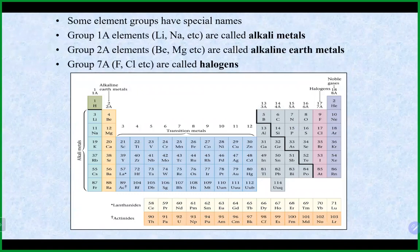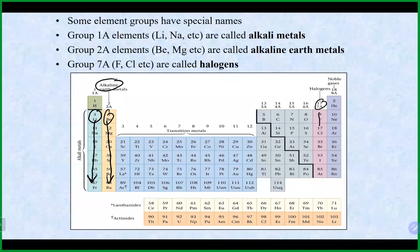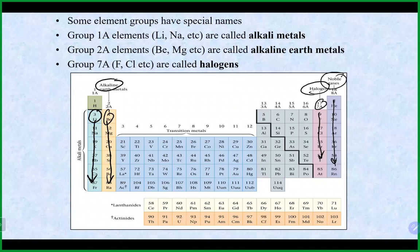Some groups have specific names. Group 1 (starting with lithium, not hydrogen) is the alkali metals. Group 2 (starting with beryllium) is the alkaline earth metals — the word alkaline means basic, and many strong bases like sodium hydroxide, potassium hydroxide, and calcium hydroxide come from groups 1 and 2. Group 7 — fluorine, chlorine, and so on — are the halogens. Group 8 is the noble gases: helium, neon, argon, and so on. You need to know the specific names of these groups and where they are on the periodic table.